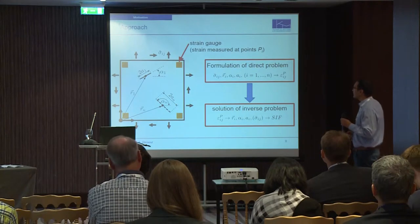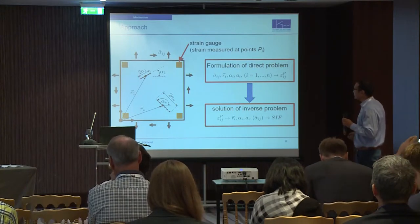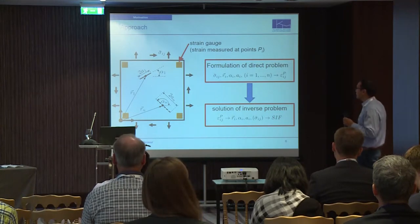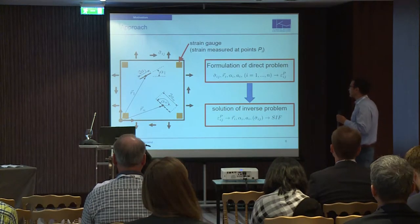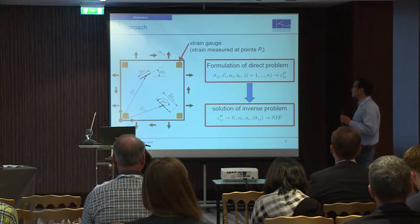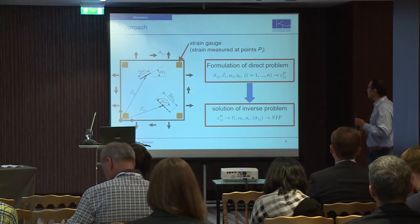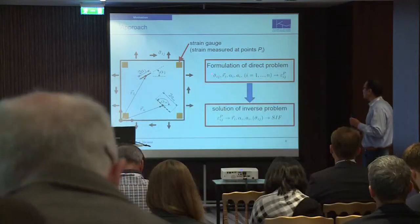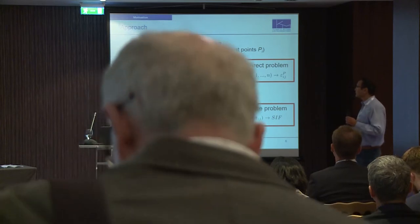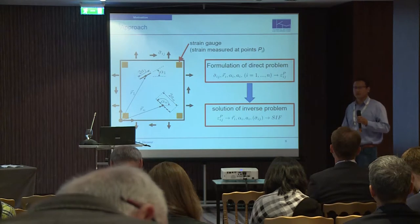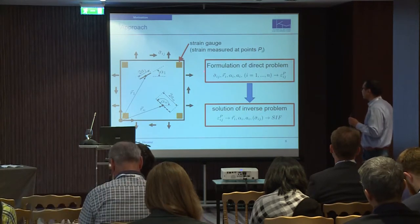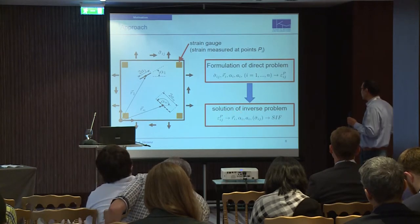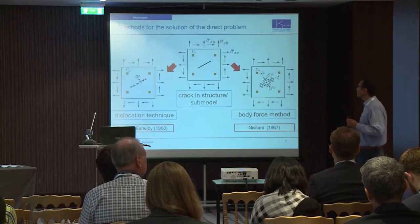This picture shows a finite plate with two cracks. This vector describes the position of these cracks, 2a describes the length of the crack, and alpha describes the inclination angle. The approach to solve this problem is as follows: first, we formulate the direct problem, that is, to determine the function which is dependent on the crack parameters and the applied loads. If these parameters are known, we can directly calculate the stress field or the strain field at arbitrary points. In the next step, we solve the inverse problem — the strain field at these points is known, but the crack parameters, boundary loads, and stress intensity factors are unknown.